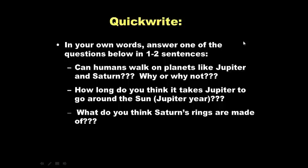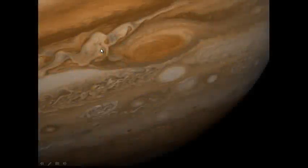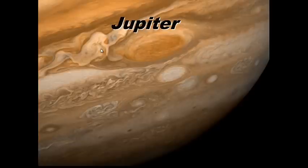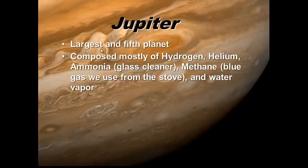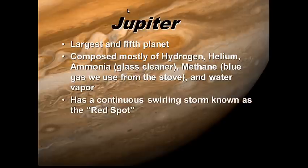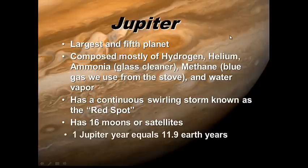We've left Mars and we're in the outer planets now. Jupiter is the largest and fifth planet from the Sun. It's composed mostly of hydrogen and helium, with some ammonia, methane, and water vapor. It has a continuous swirling storm known as the Great Red Spot. It has 16 moons or satellites, and one Jupiter year equals 11.9 Earth years — so around your 12th birthday, Jupiter has gone around the Sun once.